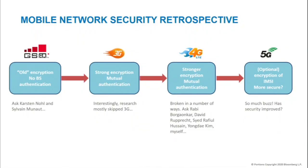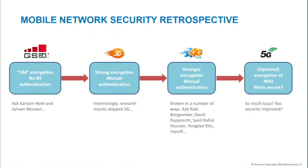We've had a bunch of generations. Everything started with GSM, which used old encryption — in their defense, the encryption was strong when it was designed, but right now a smartphone has more computing capacity than a supercomputer in the '80s, so the encryption is broken. There's no mutual authentication. Then research mostly skipped 3G, and 4G LTE came with supposedly stronger encryption and mutual authentication, which it has, but it was also broken in a number of ways. Now we have 5G with an optional feature to prevent IMSI catching, and it's supposedly more secure — we're going to see today if it really is.